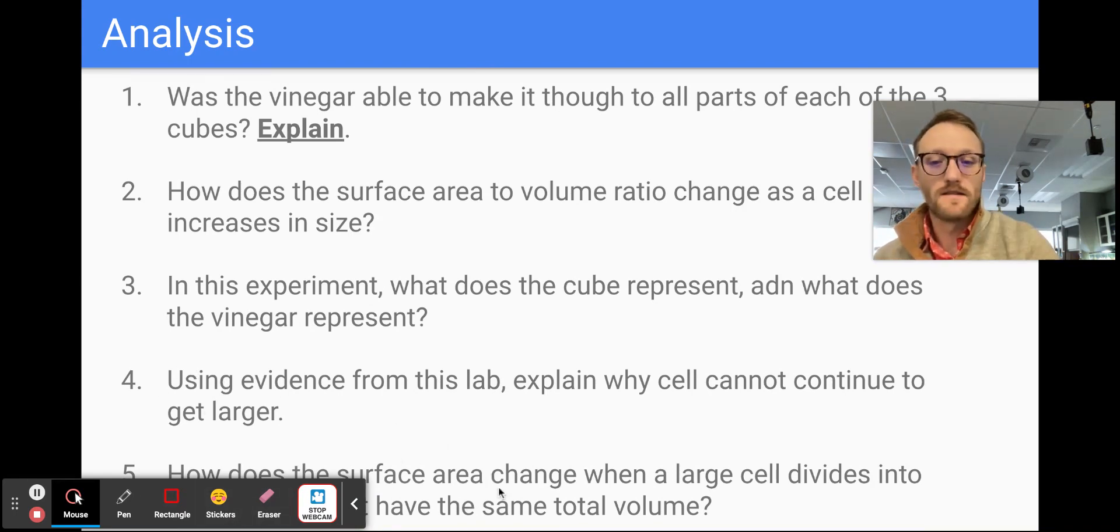And then this last question, question number five, is asking us, how does the surface area change if a large cell is divided into smaller cells but has the same volume? Basically, it's kind of the exact opposite of question number two, right? Instead of saying we got a small cell that's going to get larger, we have a large cell that we're going to divide up into smaller cells. So what we would see here is our surface area would increase. We get more surface area per unit of volume if we were able to divide that cell into smaller pieces.